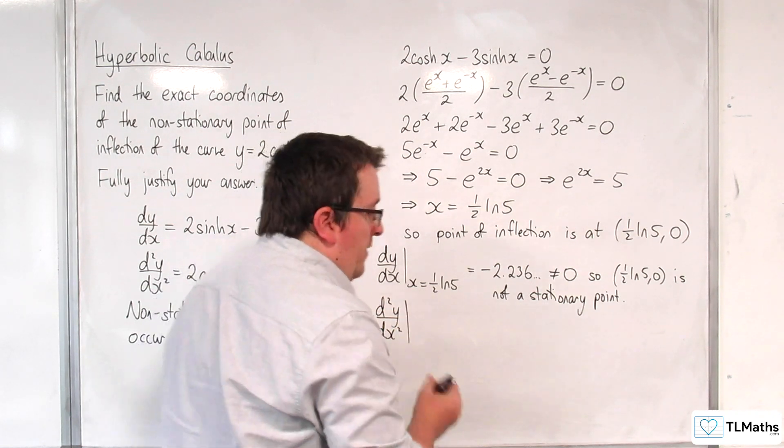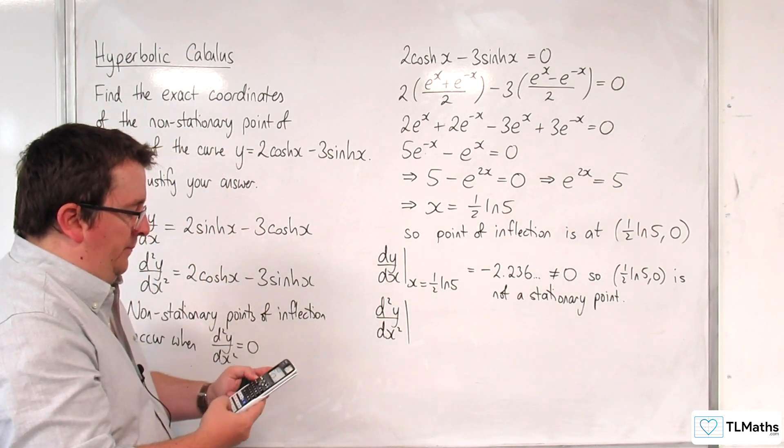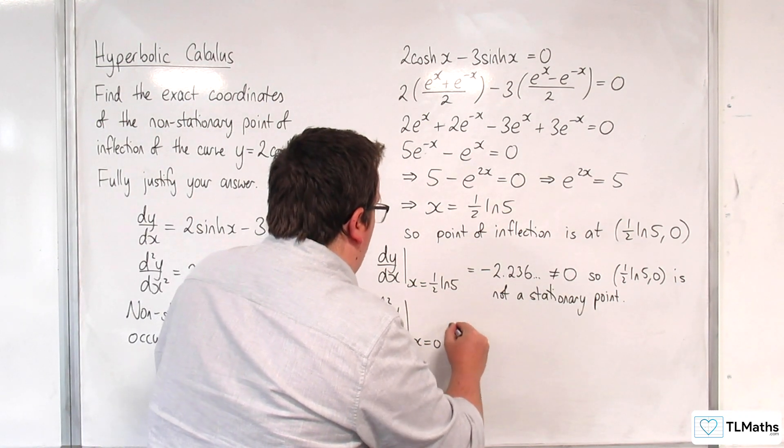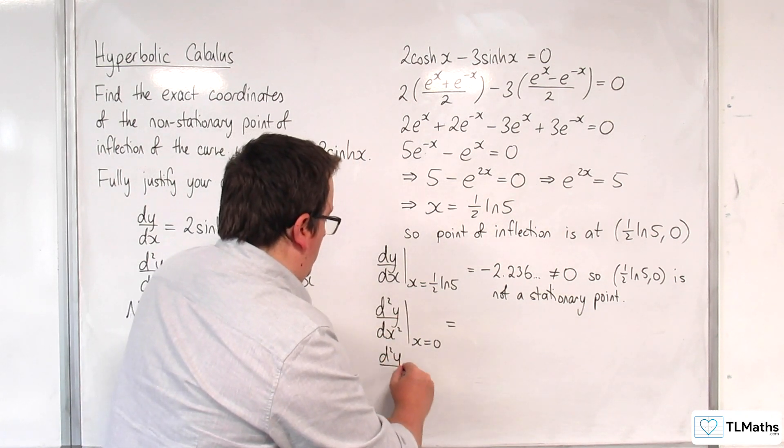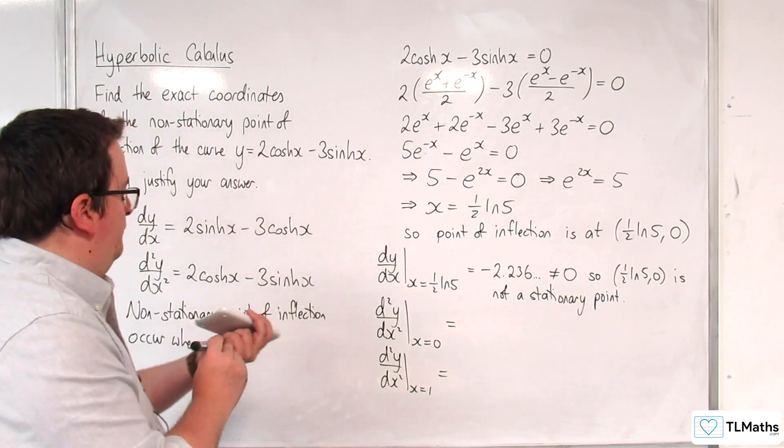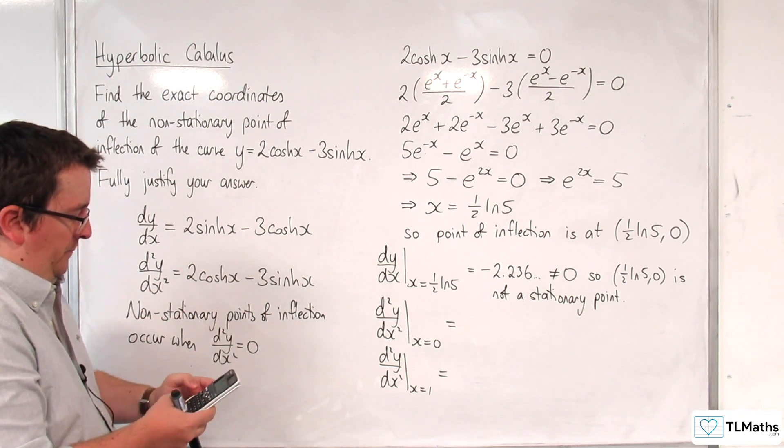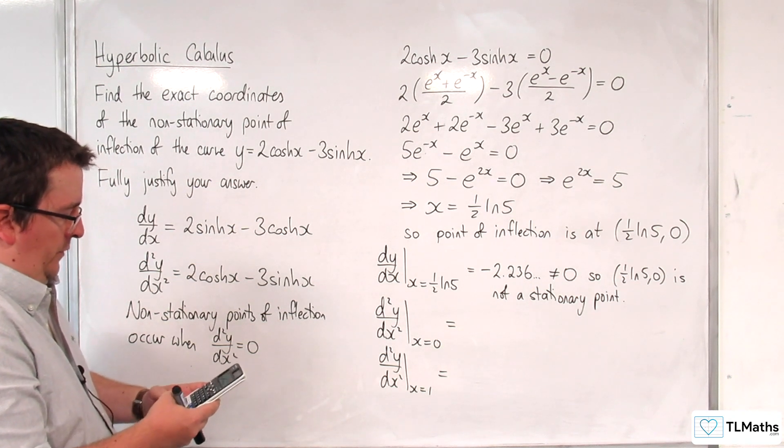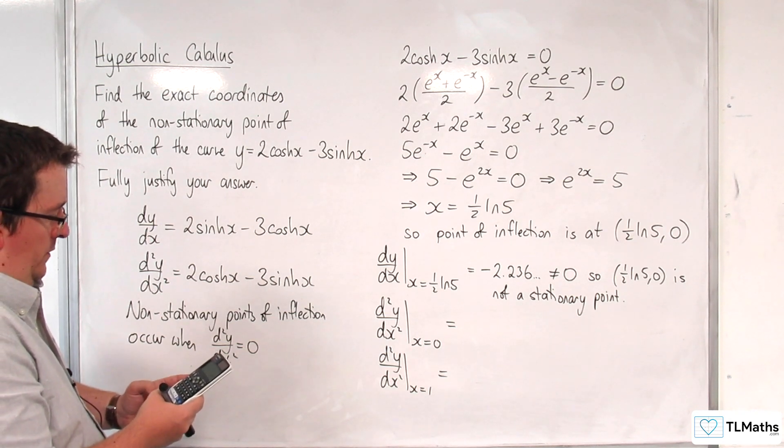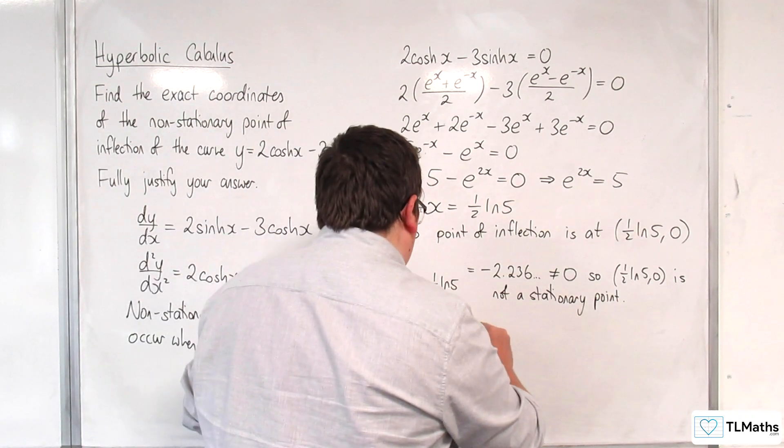So what I'm going to do for that is I'm going to work out what ½ times ln(5) is, which is 0.8047. So I'm going to substitute in a point either side. So I'm going to choose 0, and I'm going to choose 1. It's that easy to substitute in. So 2 times cosh(0) take away 3 times sinh(0) gets me 2. So that's positive.